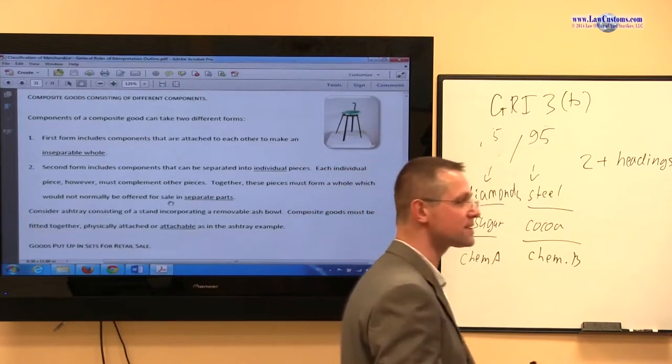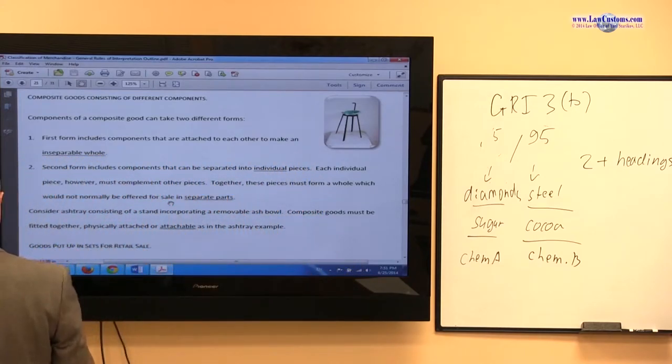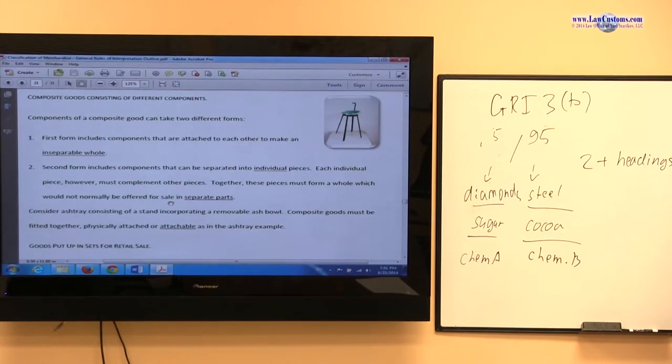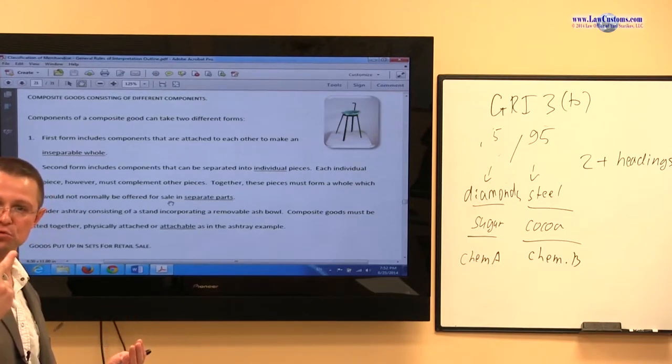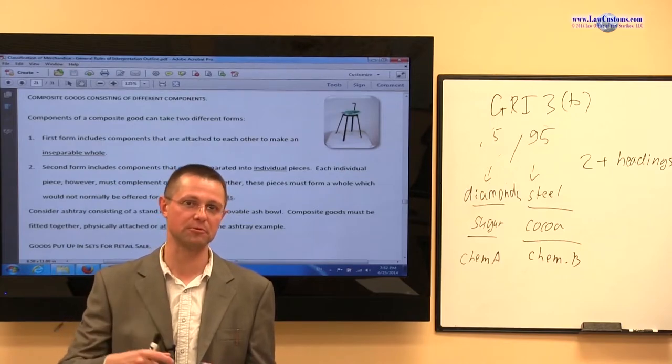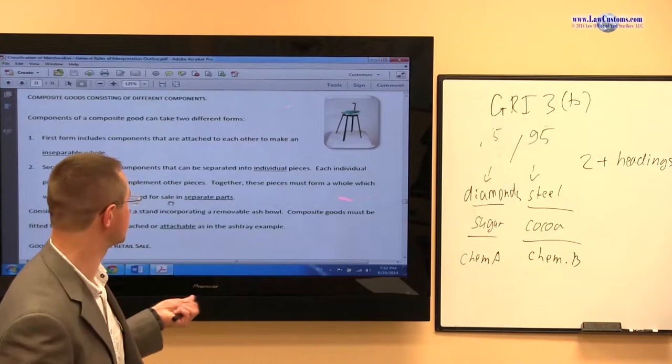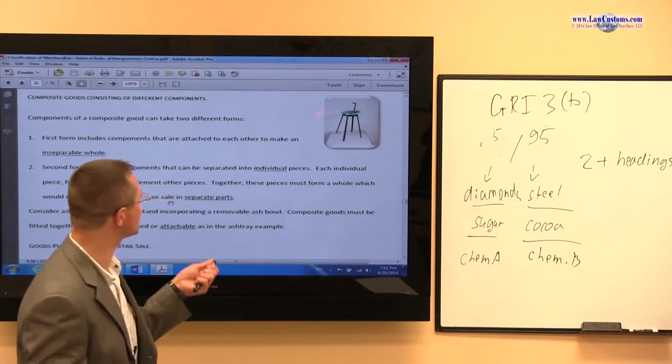How do you classify it? Do you classify it as an article of metal or ceramic? What type of things should you analyze? One of the requirements here in the composite good is that it must come together too. It must be imported together. It's not a set. Because if it was a set, it would have been classifiable under two or more headings, two different articles that have different uses. Remember the set where we had the stationary, we had a stapler, and then we had a remover, and we had strips of staples. Here, it's really one thing. You put a stand, you put an ashtray on top, and you classify it, and you use it as one.